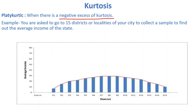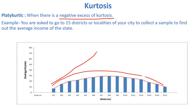The second type of kurtosis is platykurtic, which has a negative excess of kurtosis. You can see here there is a very low, flat peak in this data set compared to the earlier leptokurtic example. This flattened type of peak distribution is called platykurtic.